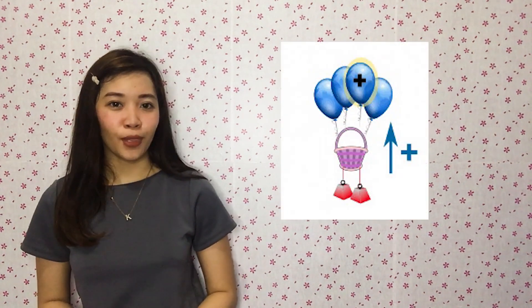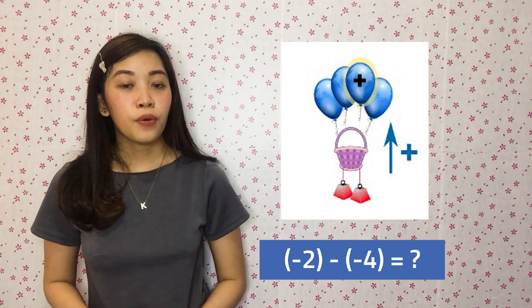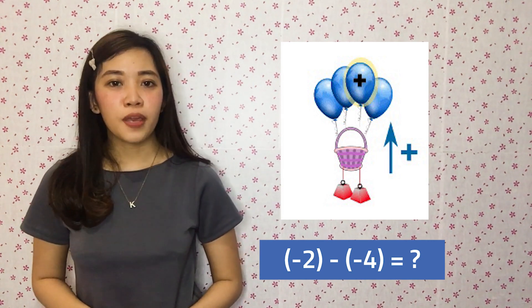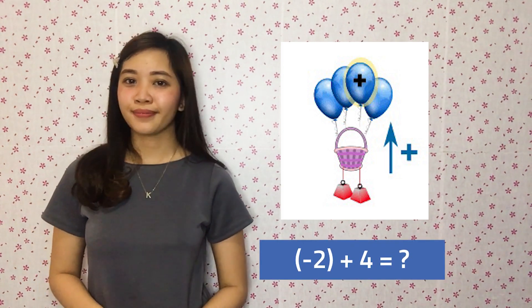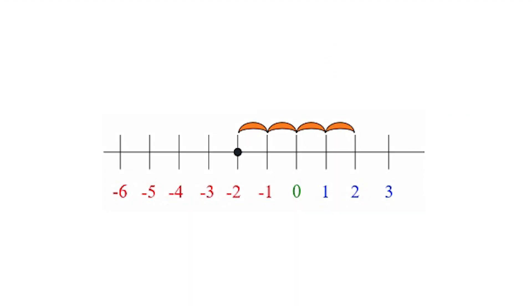How about subtracting a negative number from a negative number? This means a minus sign is followed by a negative sign, so the two signs turn into a plus sign. For example, negative 2 minus negative 4 becomes negative 2 plus 4. On the number line, it starts at negative 2, then we move forward 4 units, so the answer will be 2.